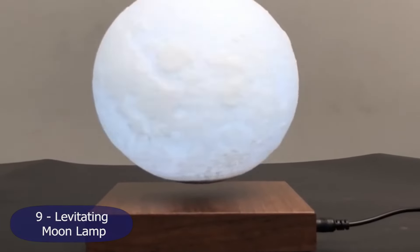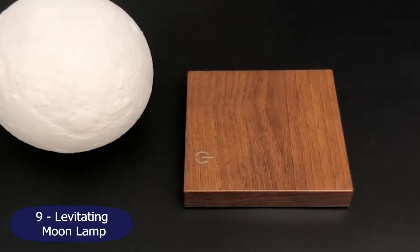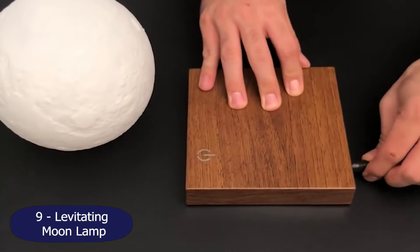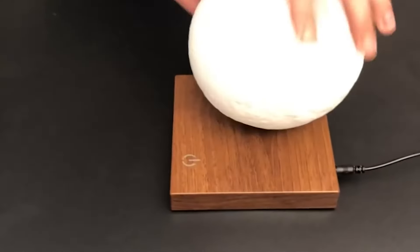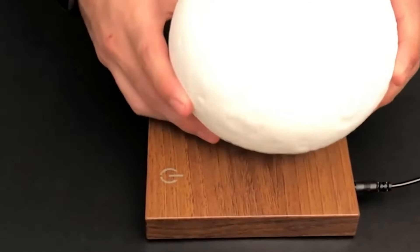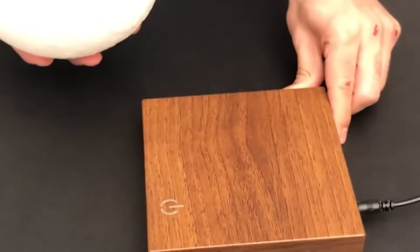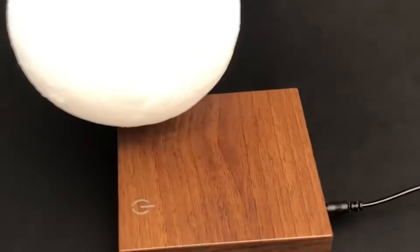Number 9, the Levitating Moon Lamp. This levitating moon lamp is one of our favorites. It uses a magnetic levitation technique which allows the globe to be suspended and spinning freely without using any support. This will attract people's eyes.